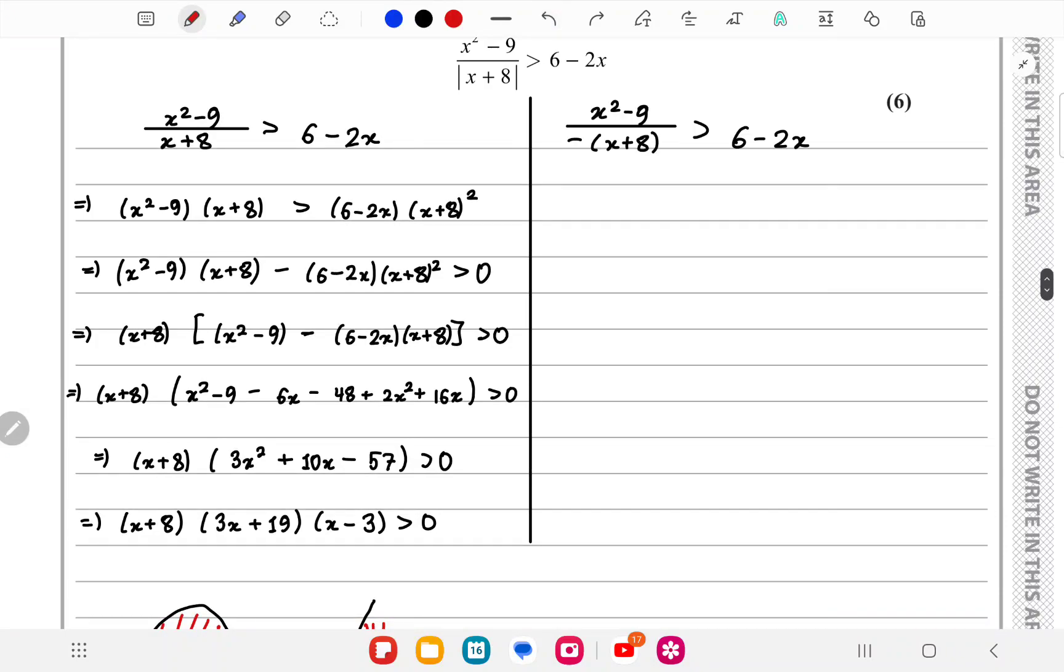Now for the negative case, using -(x+8), we do the same thing by multiplying (x+8) whole square on both sides, then bring this term on the right to the left.